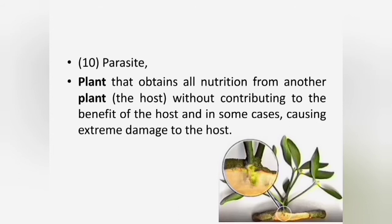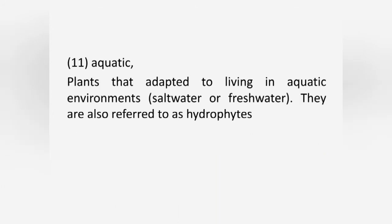All parasitic plants have modified roots called haustoria which penetrate the host plant, directly connecting them to the xylem and phloem. Some examples of parasitic angiosperm families include Balanophoraceae, Orobanchaceae, Loranthaceae and Cuscutaceae. Aquatic plants are plants that have adapted to living in an aquatic environment. They are also referred to as hydrophytes.